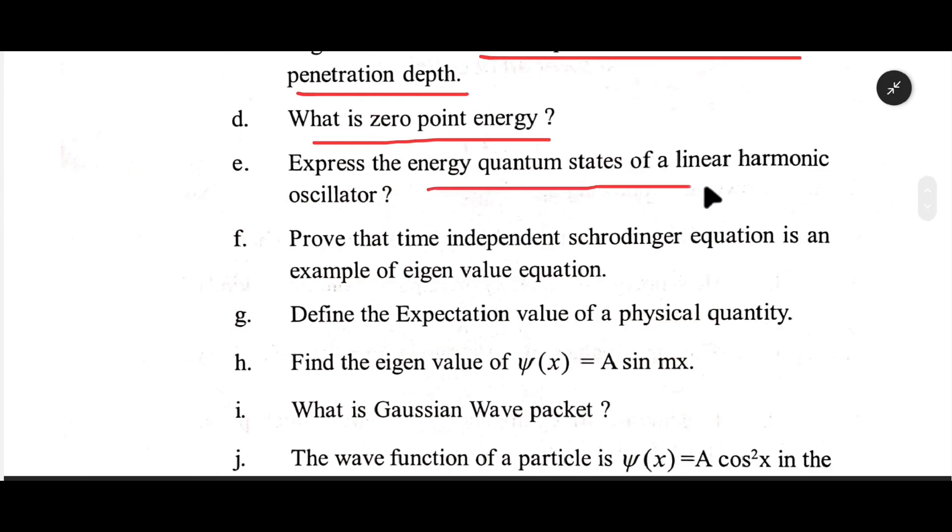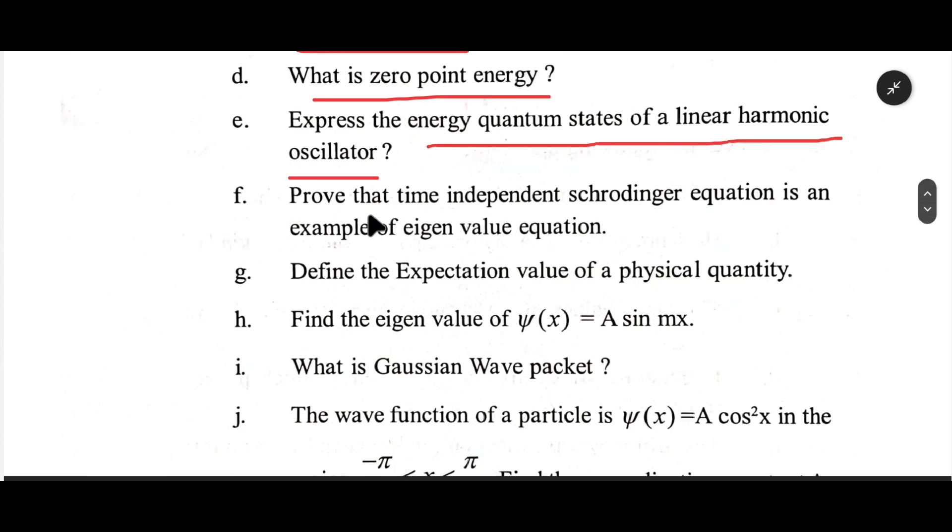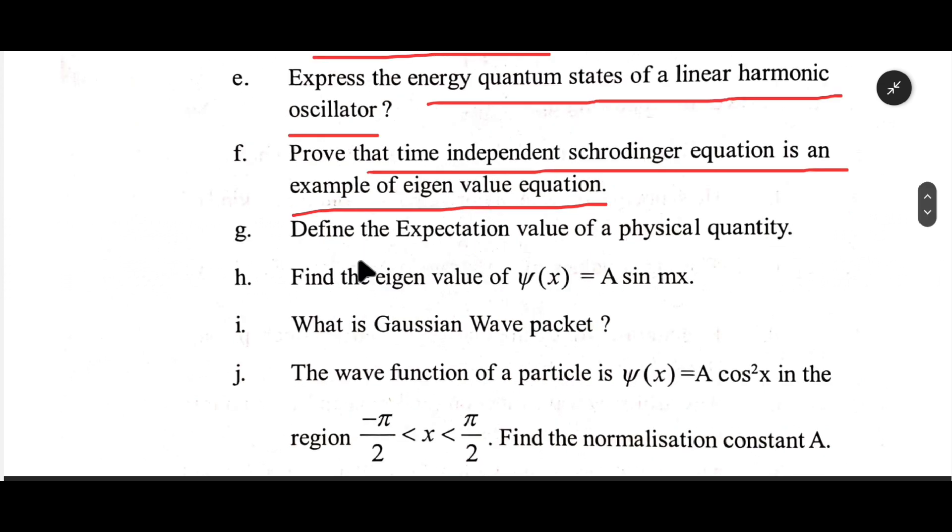e. Express the energy quantum states of a linear harmonic oscillator. f. Prove that time-independent Schrodinger equation is an example of eigenvalue equation. g. Define the expectation value of a physical quantity.